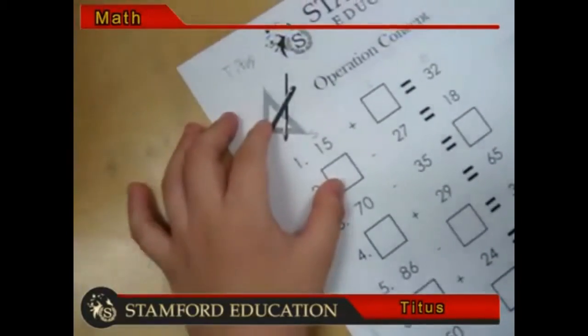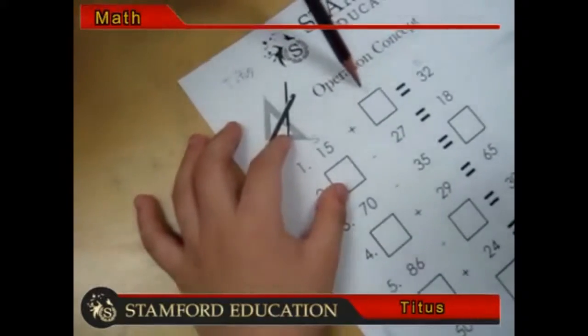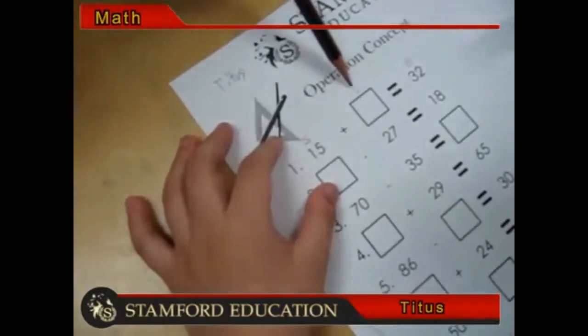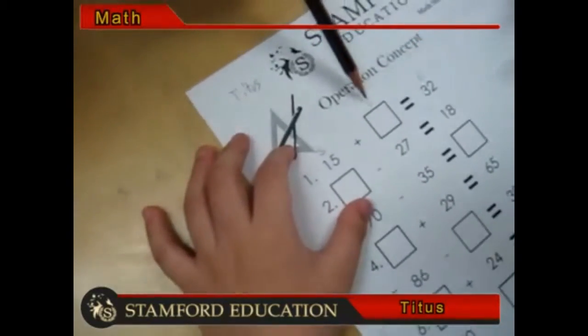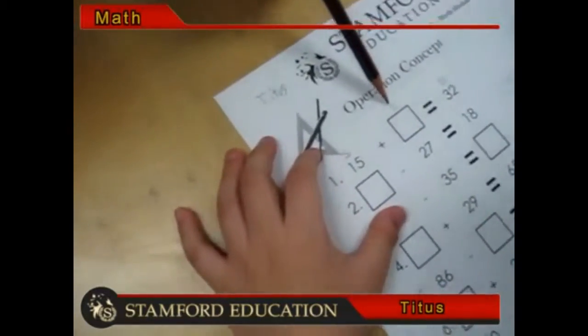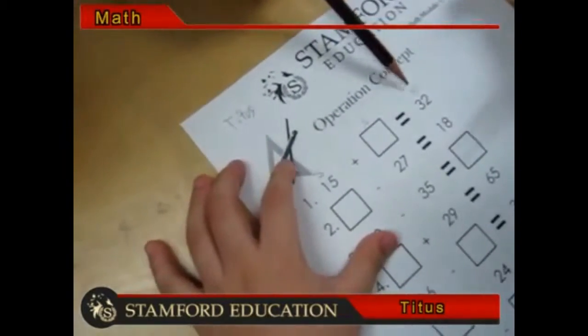Okay, so are we looking for a big number or a small number? Look at the blank - it's a small number, right? When we want to find a small number, we will need to minus. Always remember, when we want to find a small number we minus, when we are looking for a big number we plus.